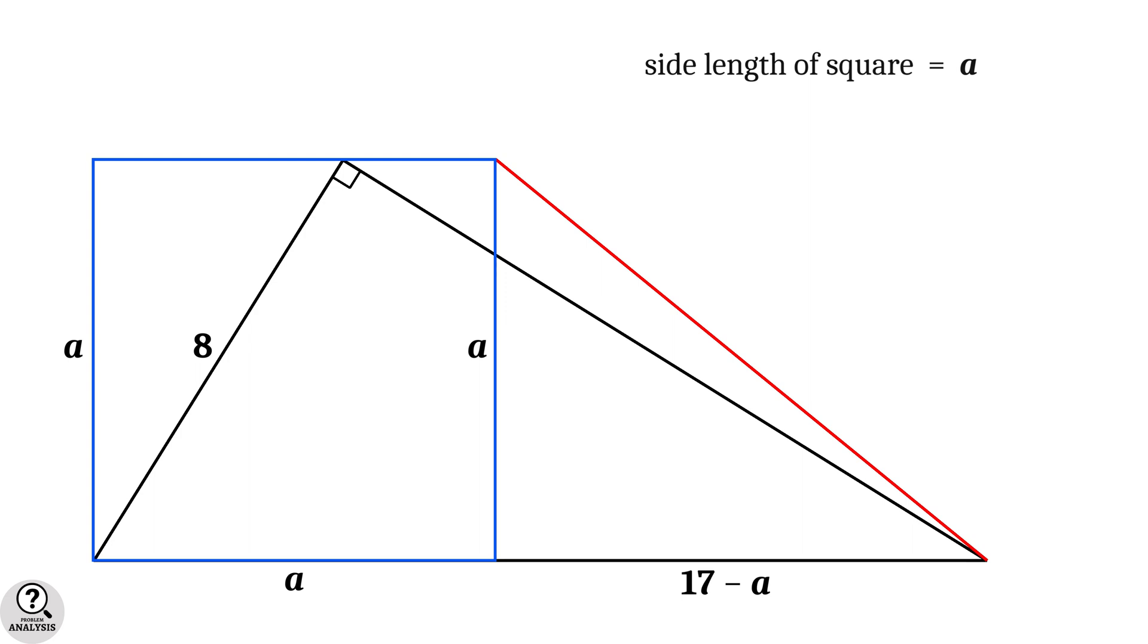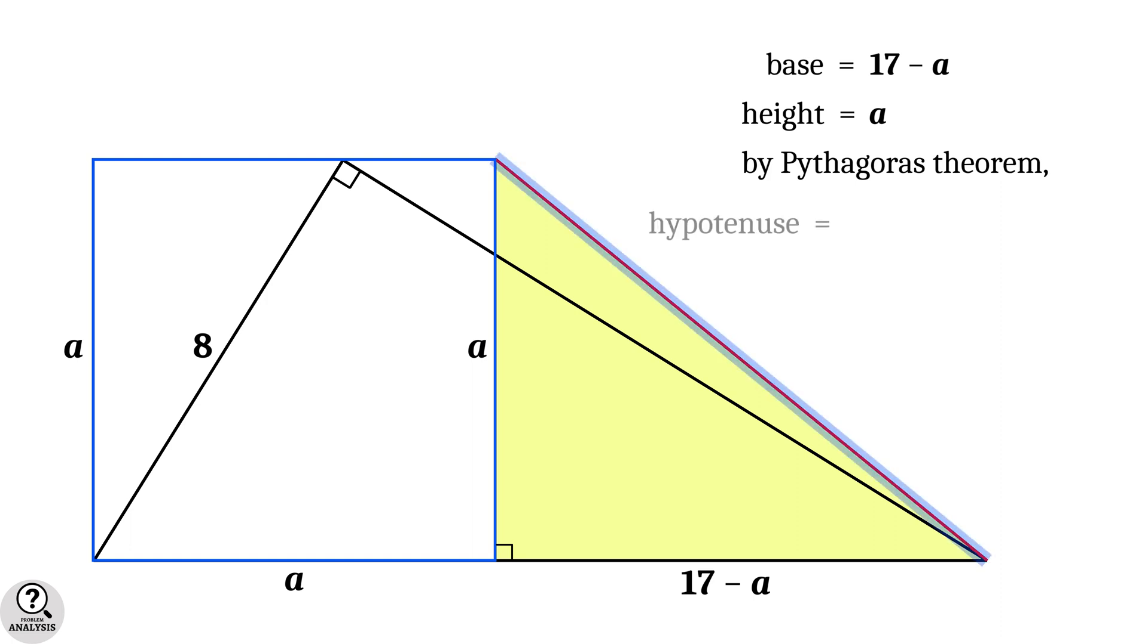Now, in the figure, you can see another right triangle here. Its base is equal to 17 minus A and height is equal to A. Then, by applying the Pythagoras theorem, we will get the hypotenuse, which is in fact the red colored line segment in our problem, is equal to square root of (17 minus A) whole square plus A square. We have to find this value. For that, first we need to calculate the value of A.